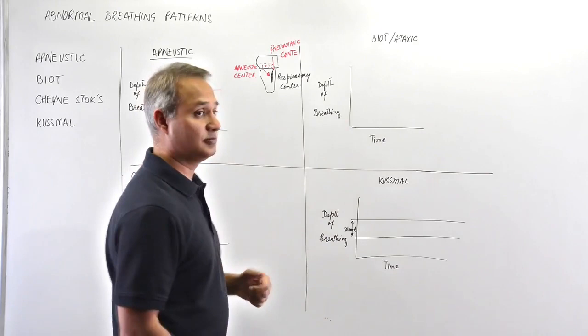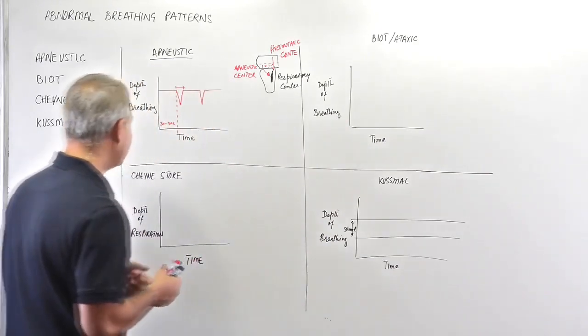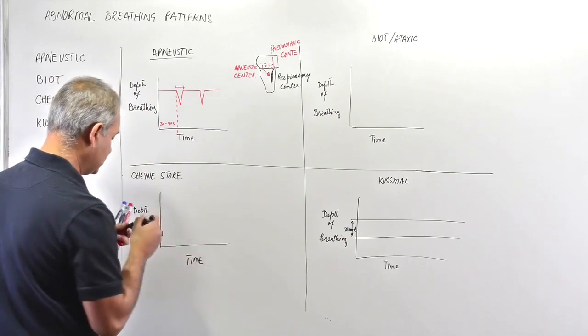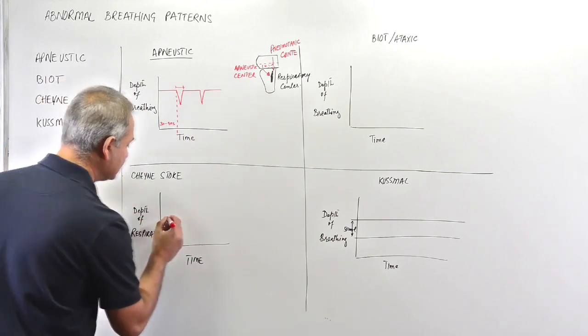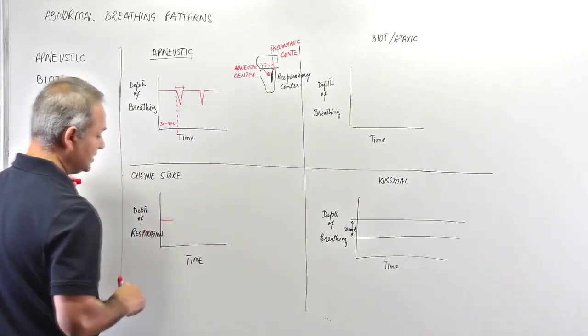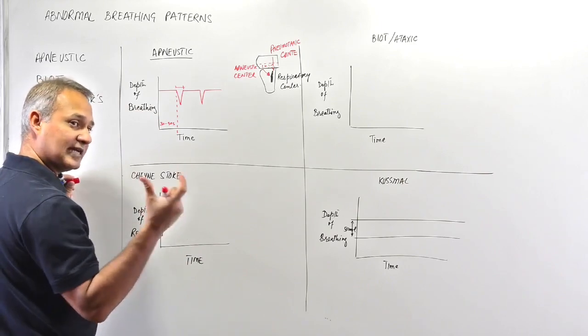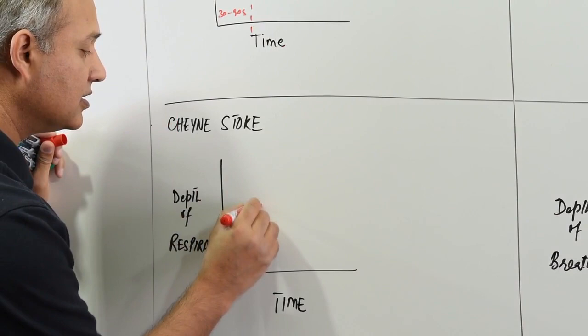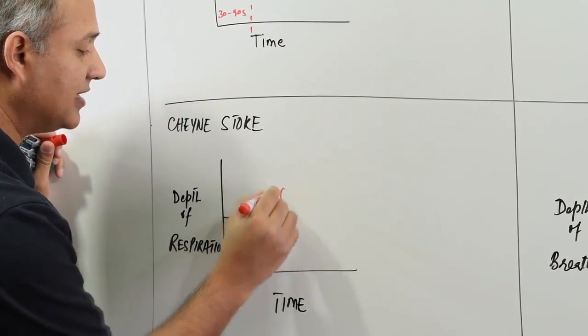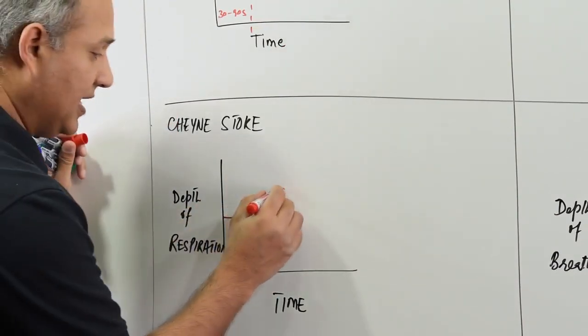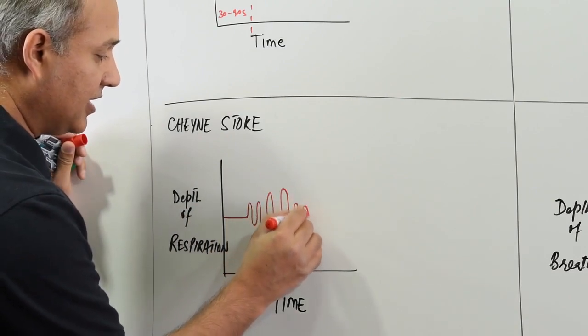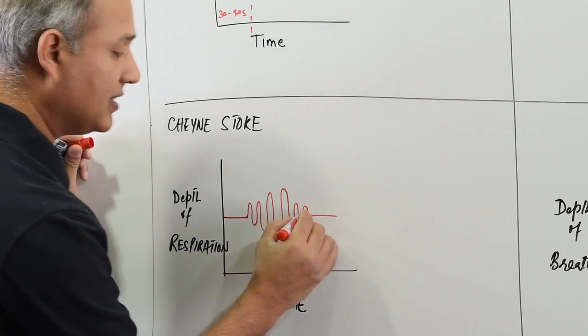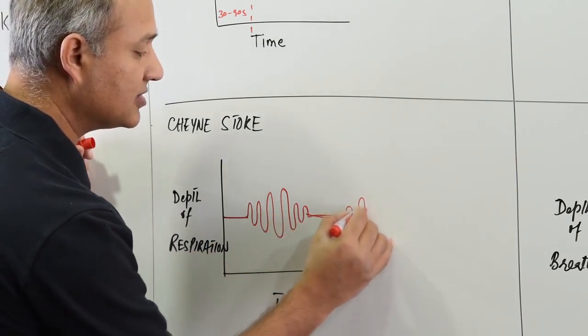Then there is Cheyne-Stoke breathing. Cheyne-Stoke is a pattern where there is apnea - a gap where there is no breathing. Then slowly the breathing increases, tidal volume increases, then it starts reducing again until it reaches another phase of apnea, and then the same cycle starts again.